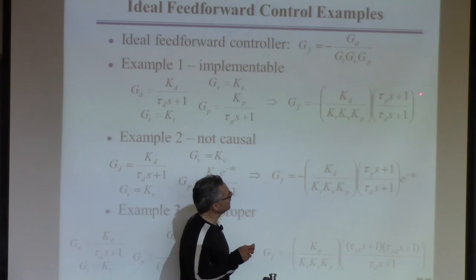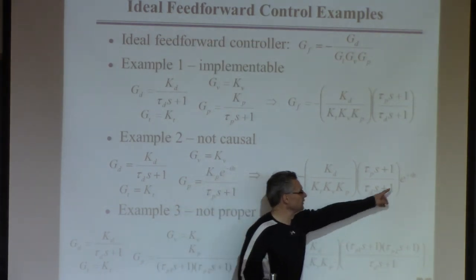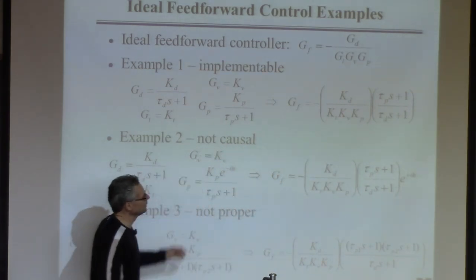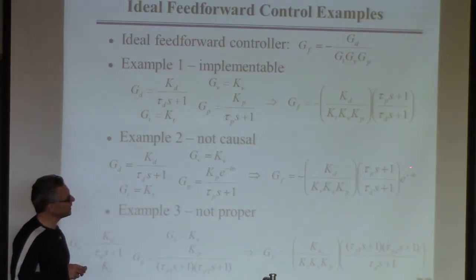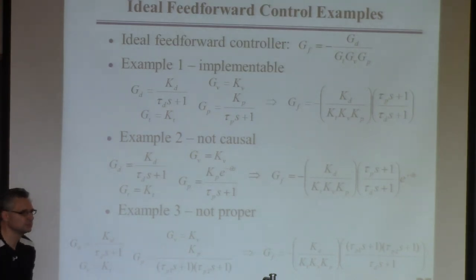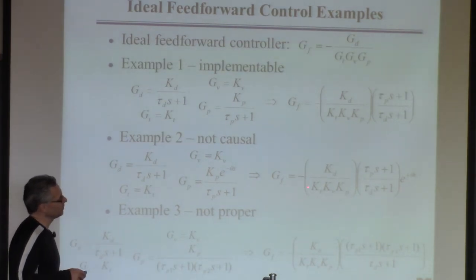So what does this imply? So this implies you need the disturbance. This implies you need to know the disturbance in the future. So it's a causality problem, right? It's not causal. To implement this controller, so let's say the time delay is five minutes. To implement it, I have to know what the disturbance is going to be in five minutes. I'm not going to know. I don't know. I'm not clairvoyant, therefore I don't know what the disturbance is going to be in five minutes. So this is not directly implementable.